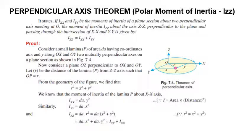Now we will see an important theorem called the perpendicular axis theorem, which also explains the concept of polar moment of inertia. So far we have seen the moment of inertia about centroidal XX and YY axes. This theorem tells us about the moment of inertia about an axis ZZ perpendicular to the plane and passing through the intersection of XX and YY axes. According to this theorem, IZZ equals IXX plus IYY.